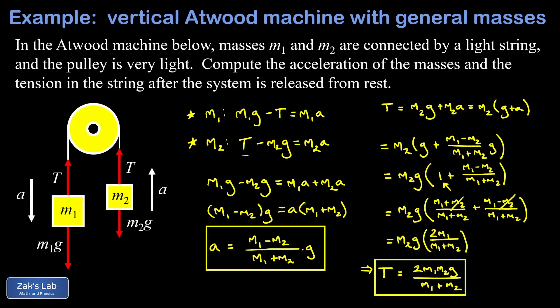If these two masses are equal there's not going to be any acceleration to the system, and that means the tension pulling up on each mass would just be equal to its weight. So the tension should come out to just mg if both of these masses were equal and we give them a value of m.